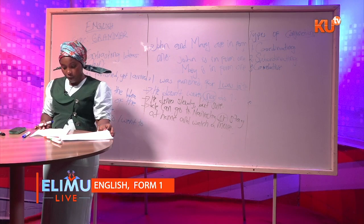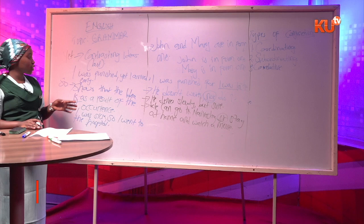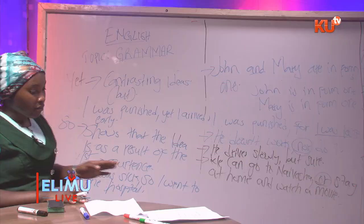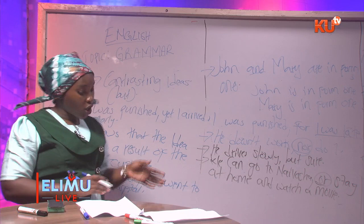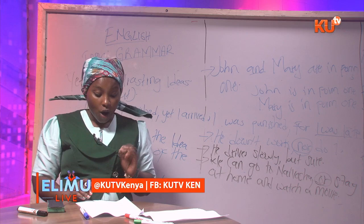There is a certain point to note: all coordinating conjunctions, when you join two sentences, we always separate the first part from the second part using a comma. Also, all seven coordinating conjunctions — the FANBOYS — except 'for,' can join phrases, words, or clauses.